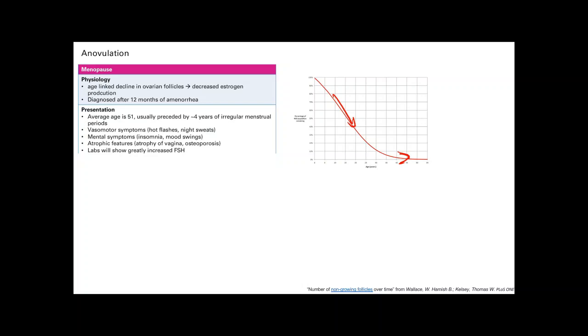And that's going to happen. It can depend for each patient. But on average, it's about four years of irregular menstrual periods before you finally hit that 12 months without having a menstrual period.